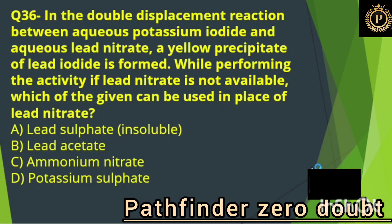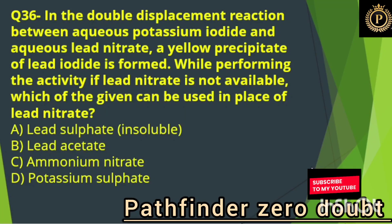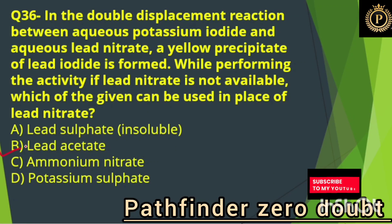In the double displacement reaction between aqueous potassium iodide and aqueous lead nitrate, a yellow precipitate of lead iodide is formed. If lead nitrate is not available, which of the given can be used in its place? Option B, lead acetate.